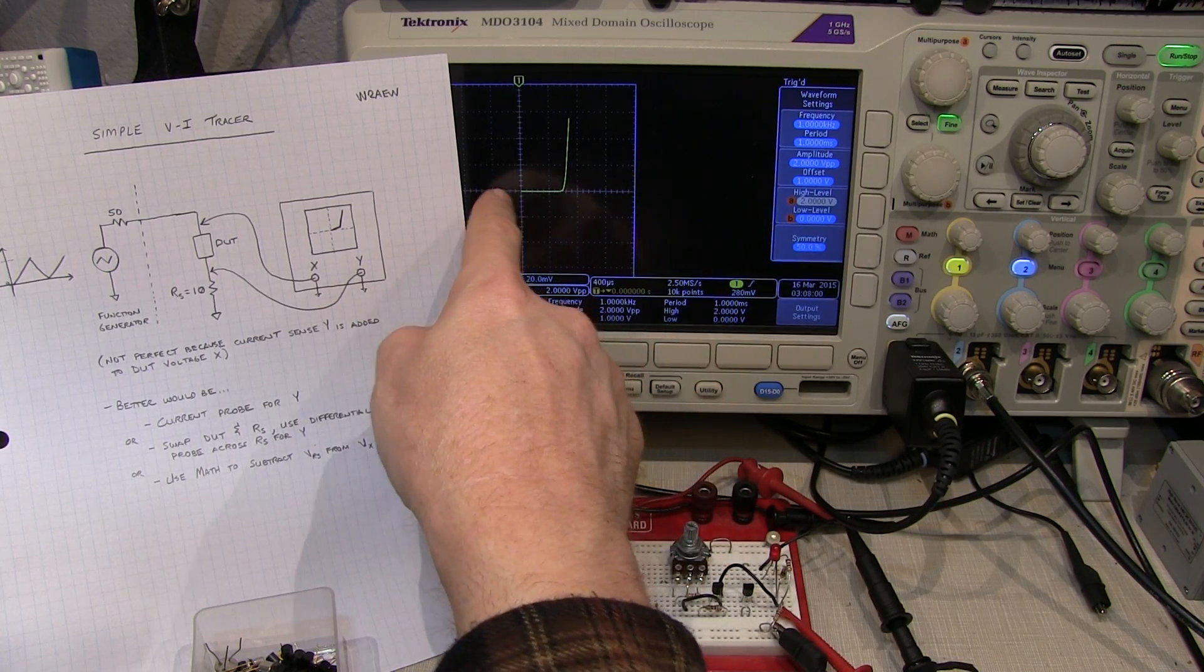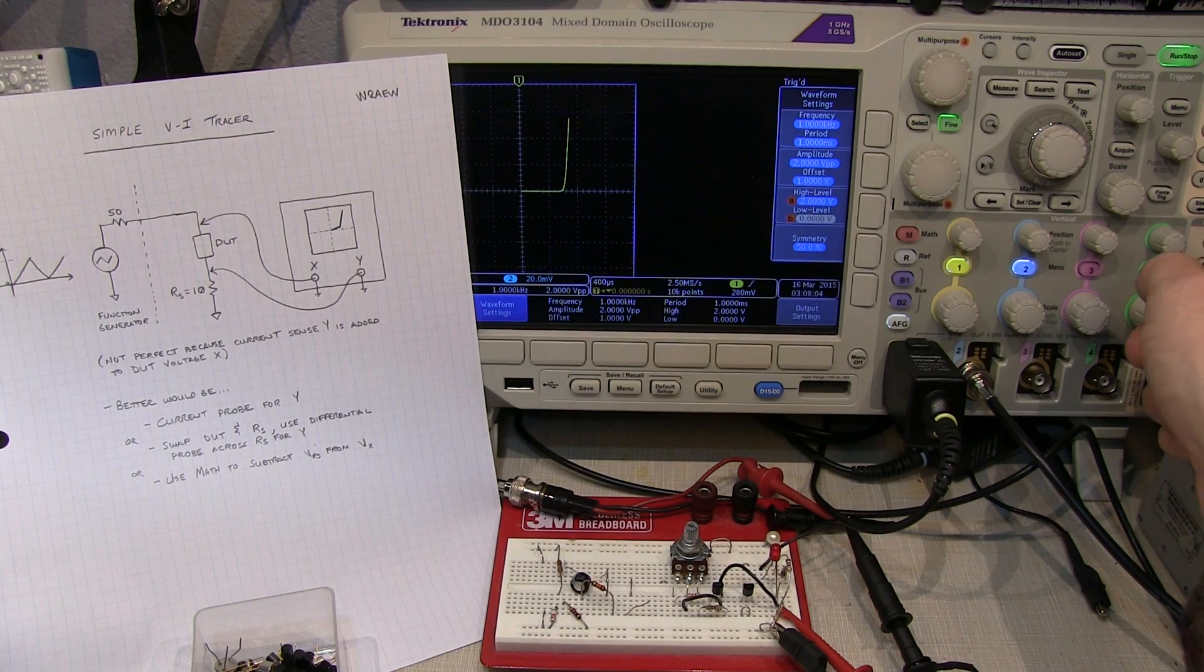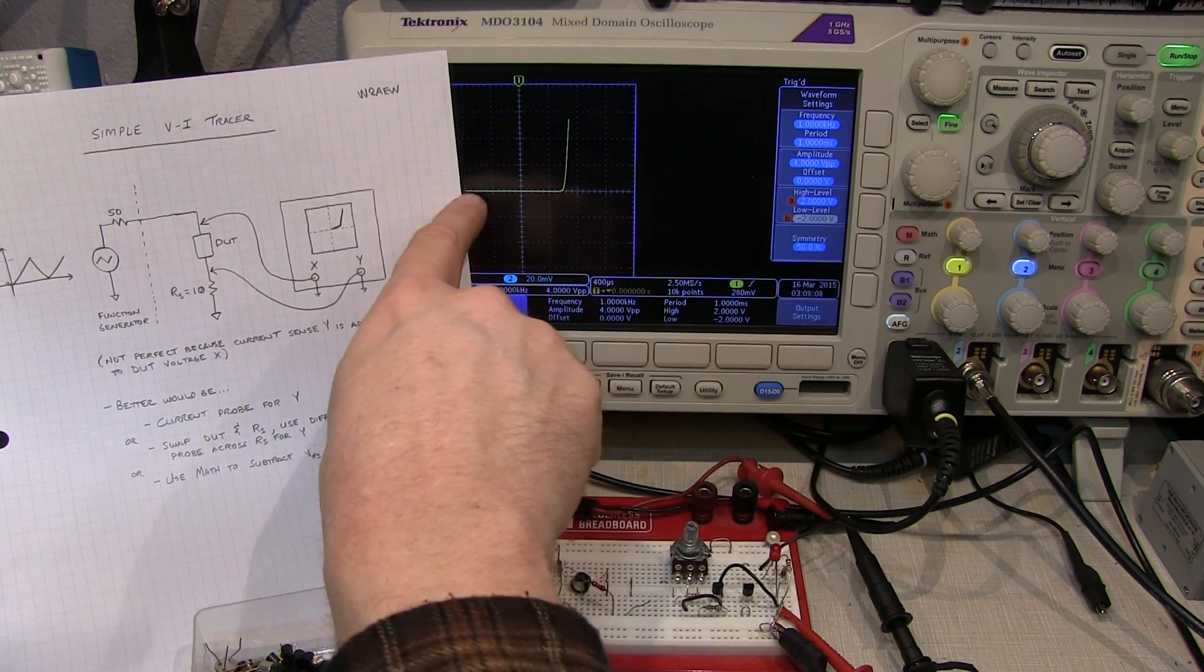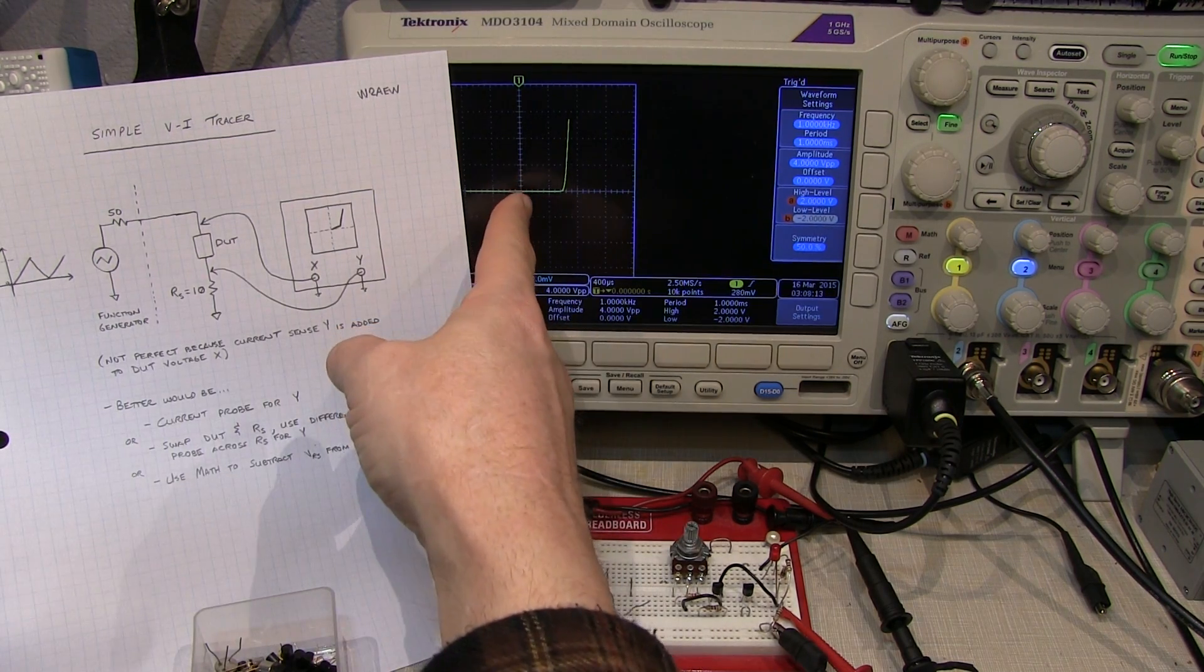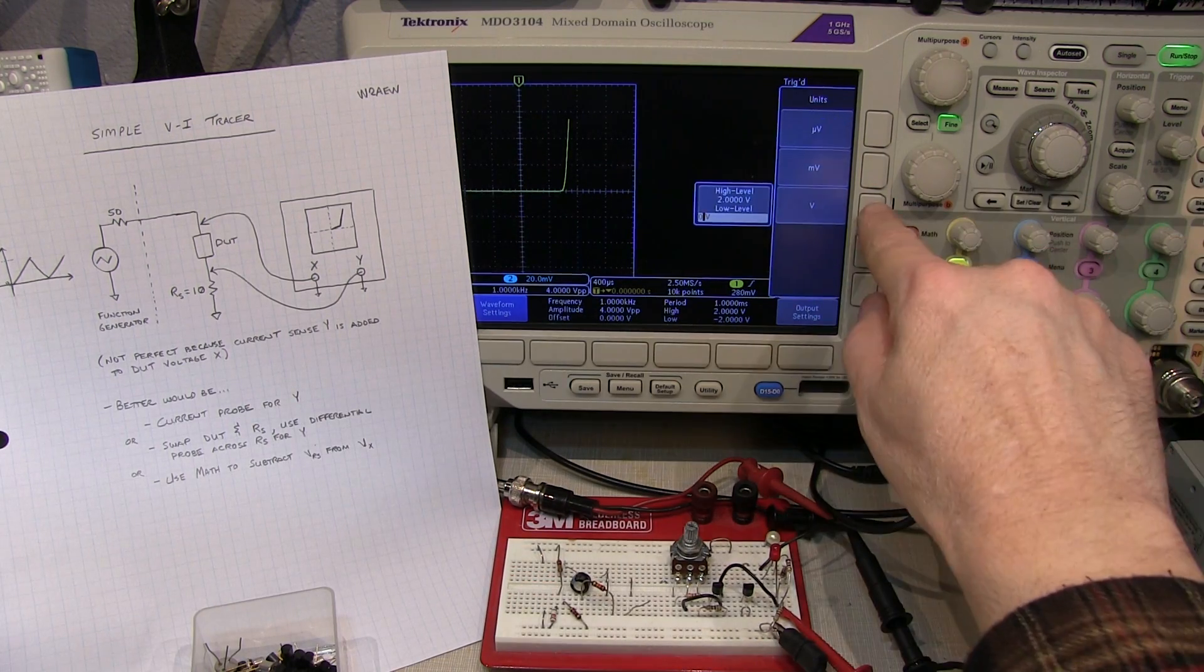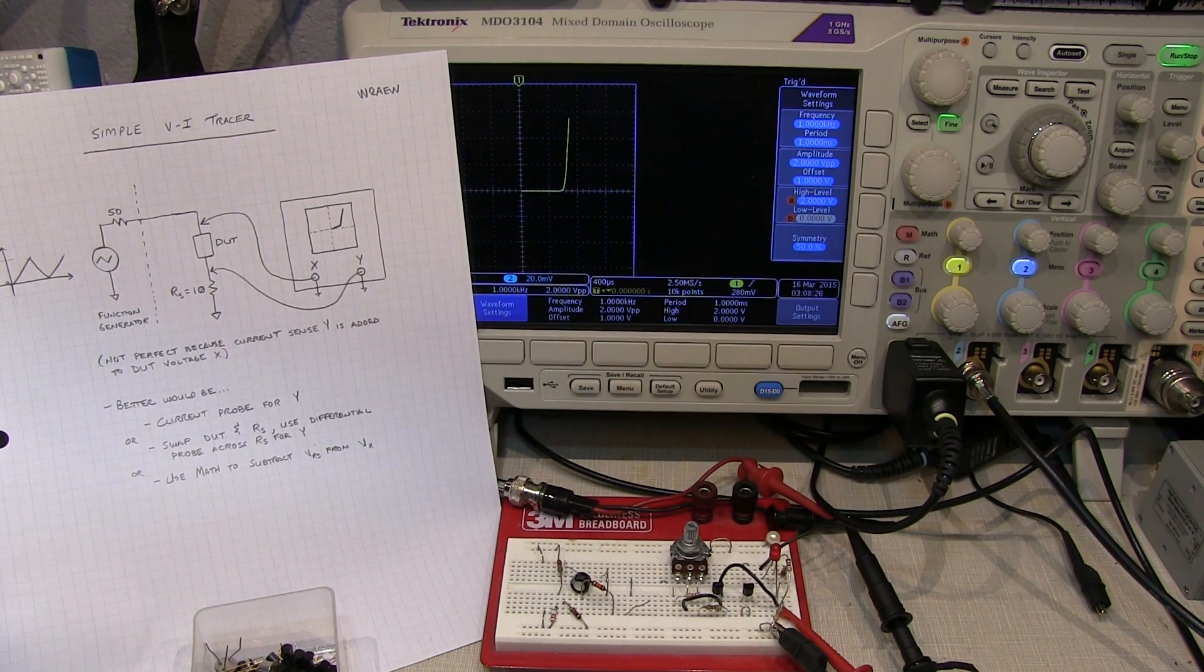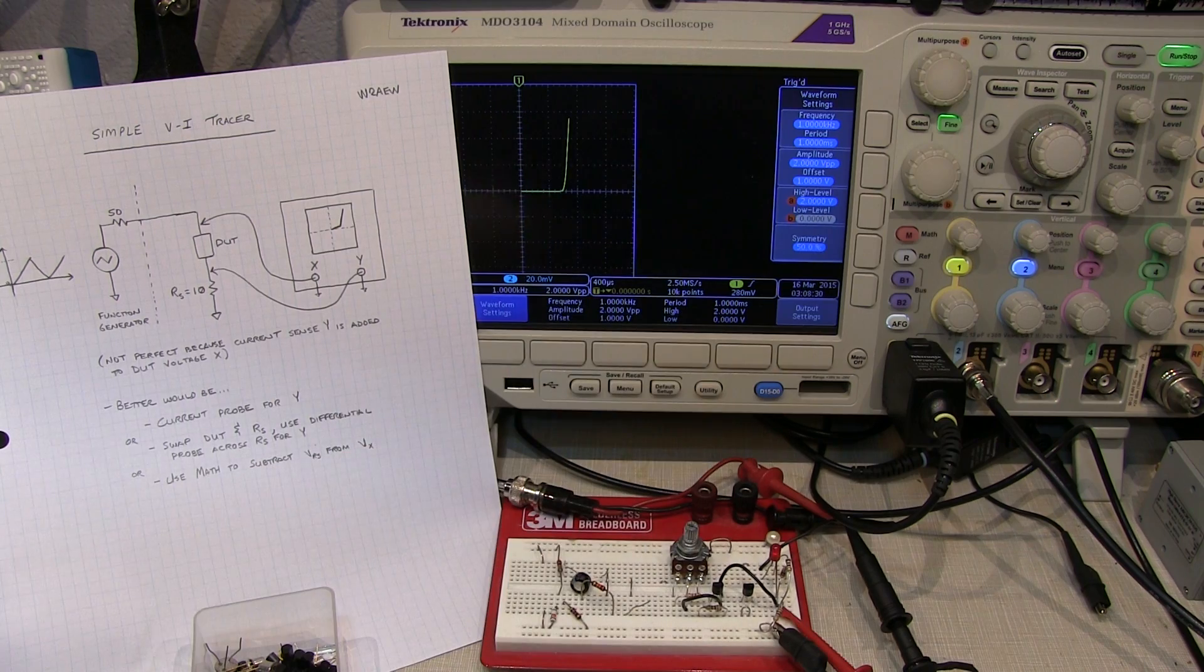I can also bring the function generator negative. If I take the low level instead of 0 volts, let's make it minus 2. I can see I can extend the characteristic that way. Now many function generators won't have enough voltage range to maybe go all the way out to show you the Zener breakdown of a Zener diode or something like that. And for my purposes, for the next video I was working on, I didn't need to look at any of the negative responses, just in this first quadrant here. So just sweeping from zero to some positive voltage was sufficient.